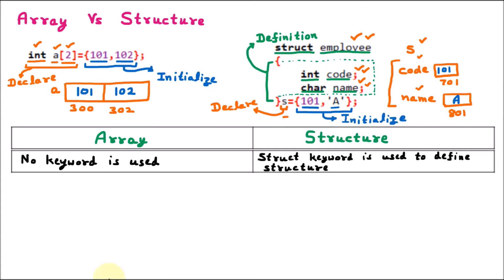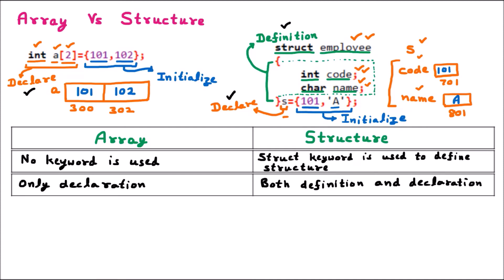Here we have the next difference between array and structure. In the array we only have the declaration. But in the structure we have both declaration and definition. So inside the array there is only declaration, but inside the structure there is both definition and declaration.